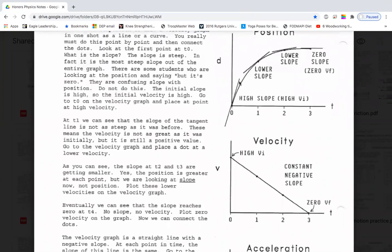At time zero, we have the high velocity. At time zero, we put a point right here. That's my high initial velocity. At time one, we have a lower slope and we have a lower velocity.